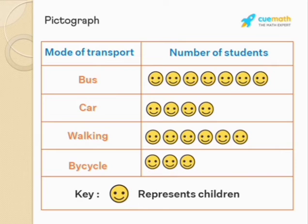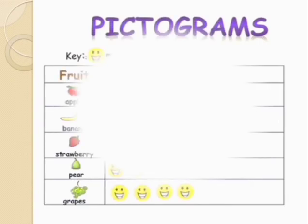By bus, seven students are coming. By car, four students. By walking, six students. By bicycle, three students. Another name for pictograph is pictogram.